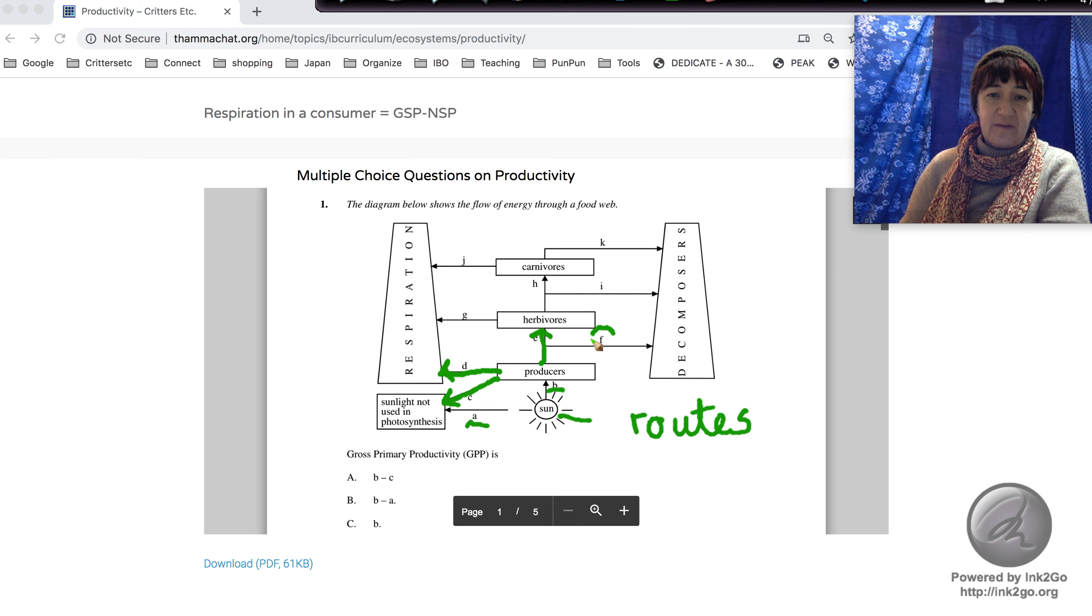Gross primary productivity equals net productivity plus respiration. The gross primary productivity is like the amount that you get paid—the overall amount of energy that the plant gets.